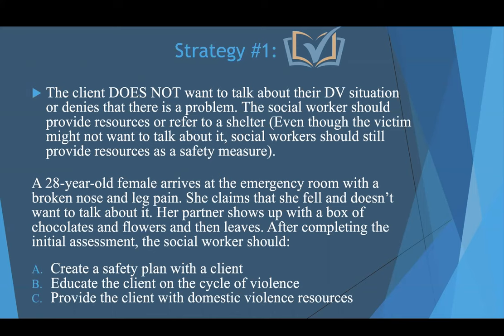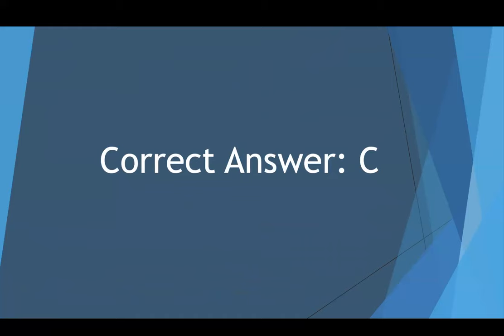So A is not the answer. B — educate the client on the cycle of violence — based on the information provided, this client does not want to talk about it, so we're not going to educate someone when they don't want to talk about it. The correct answer is C. Remember: if the client does not acknowledge they're in a domestic violence situation and they don't want to talk about it, the best answer option is to provide resources.